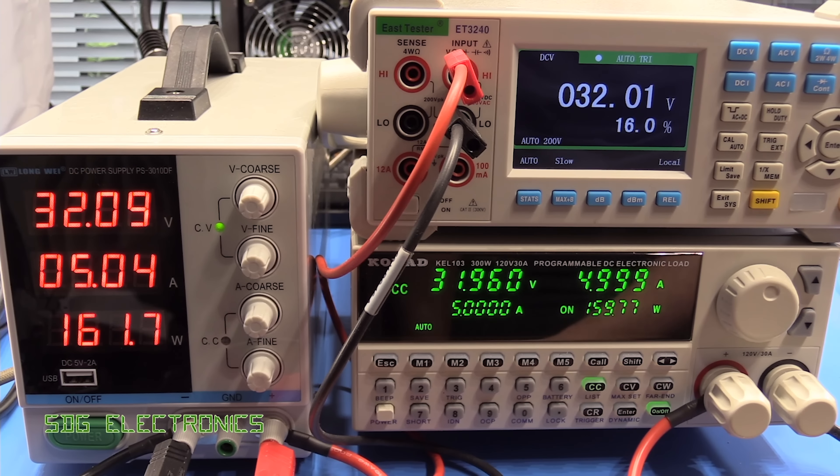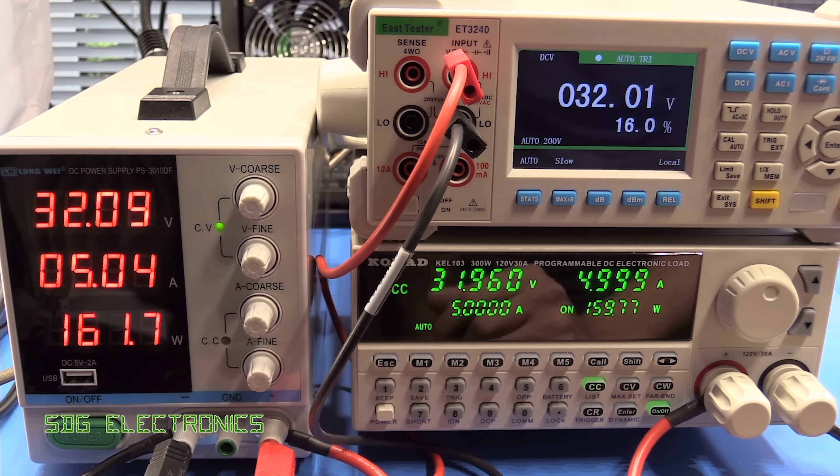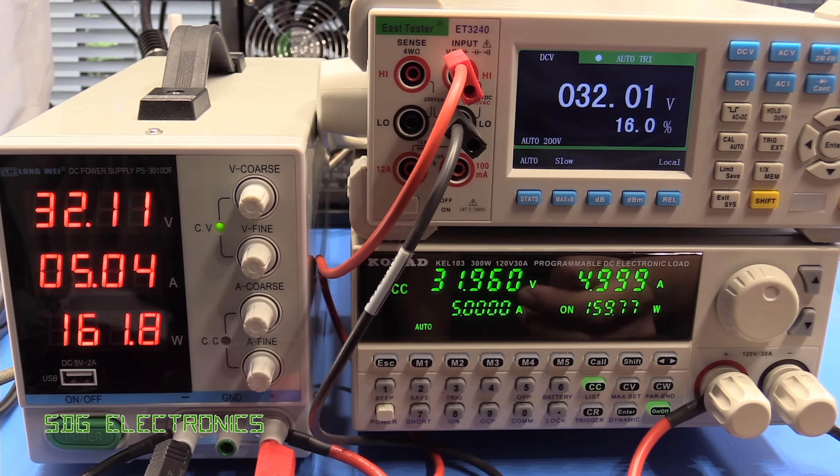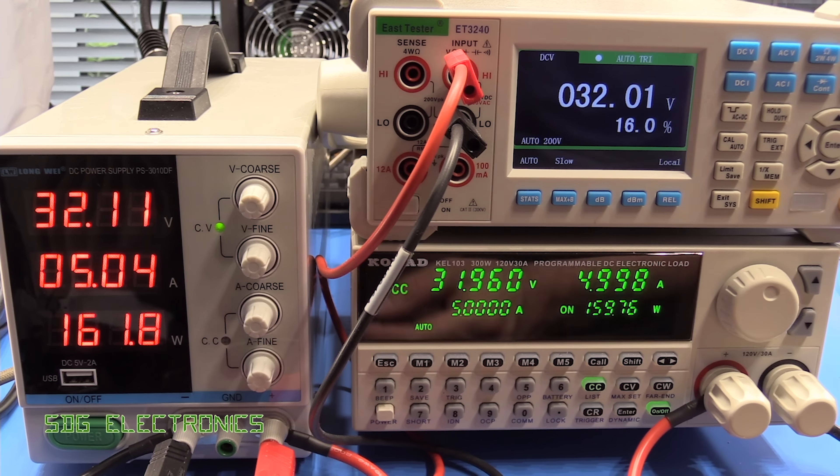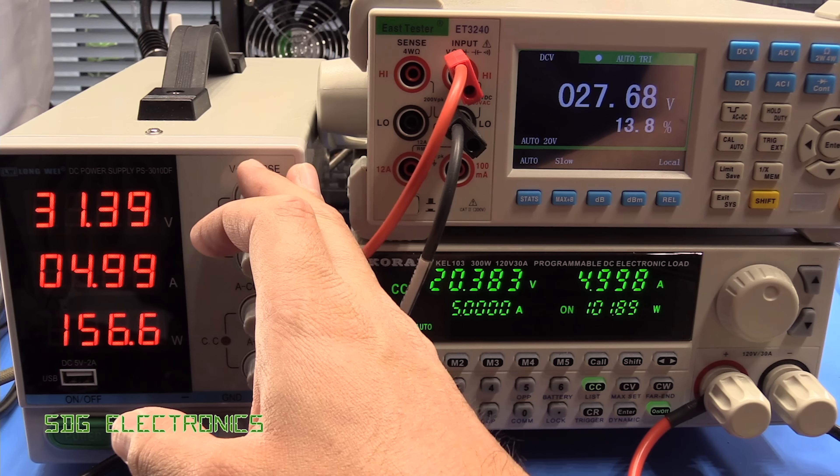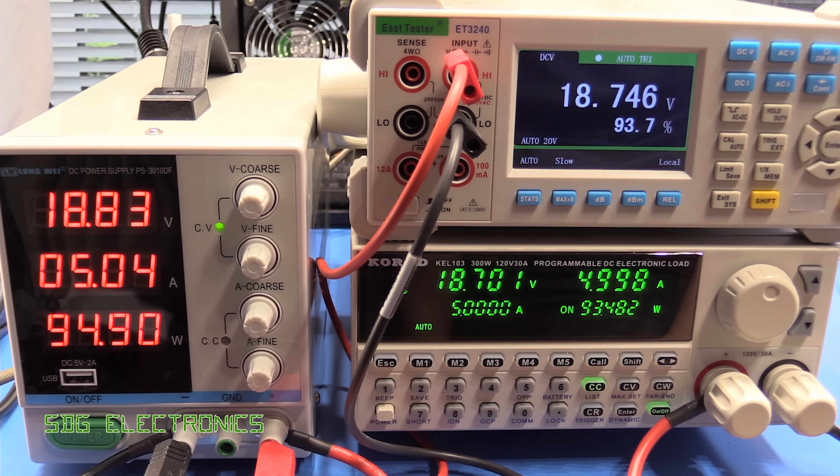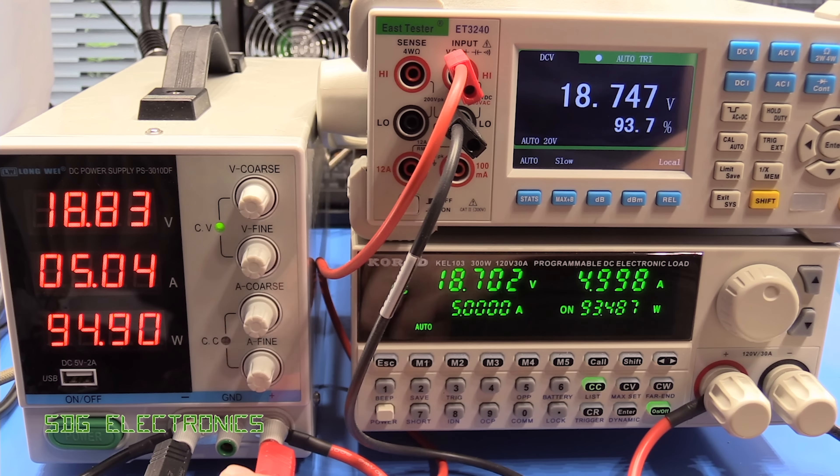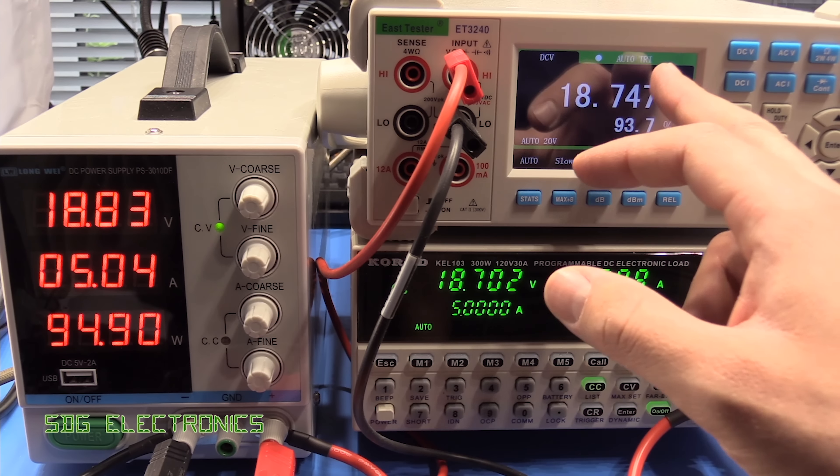Now, before we take it up to 10 amps, we will just check some of the other voltages and just see how they look in terms of regulation, just because there is the potential that at the highest current, we might take out the power supply and stop it working. So let's have a quick look at some of the others. 18.83. And we're pretty much okay, just off very slightly, losing a little bit more between the PCB and the front panel terminals here.